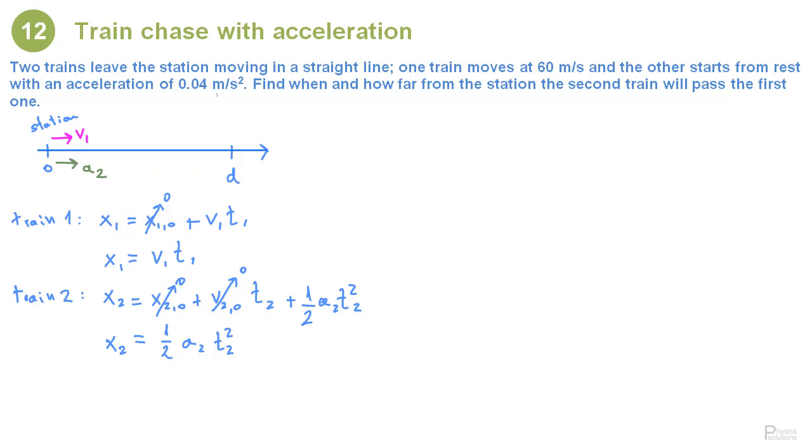We now focus on the passing point. At the passing point we want to impose to these equations that the two trains are going to be in the same place at the same time. That means we set x1 to be equal to x2 which is a quantity we call d, so this point, the passing point. And since the two trains departed at the same time we also want t1 to be equal to t2 which we will simply call t to avoid the subscripts everywhere. We can do the same with the acceleration. We can simply call a2 equal to a since this is the only train that is accelerating.